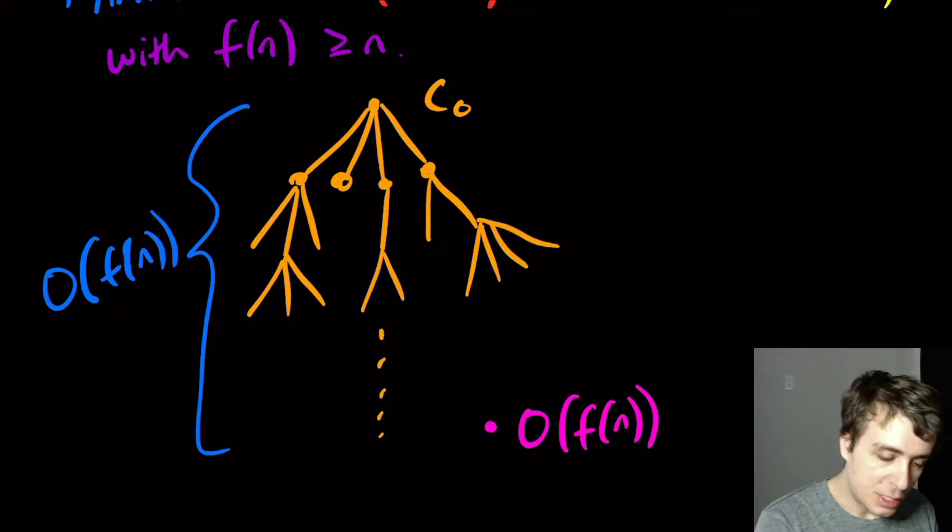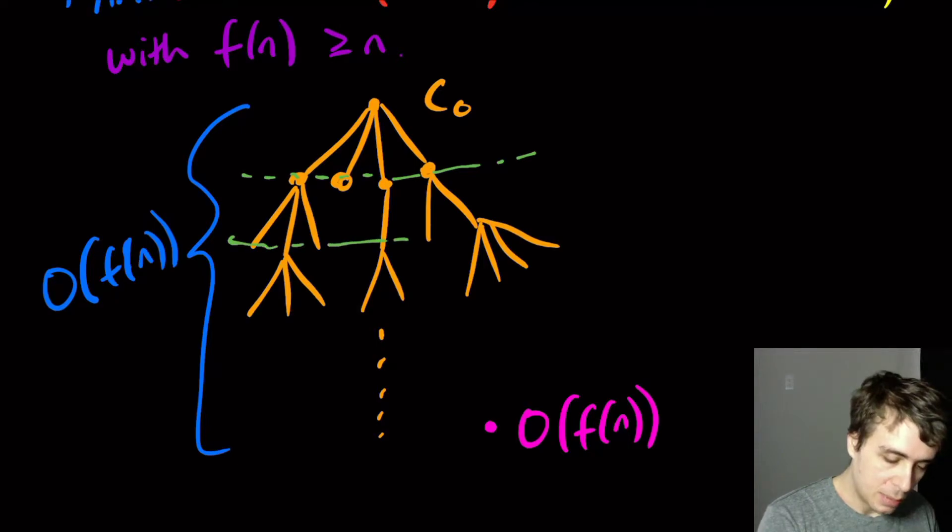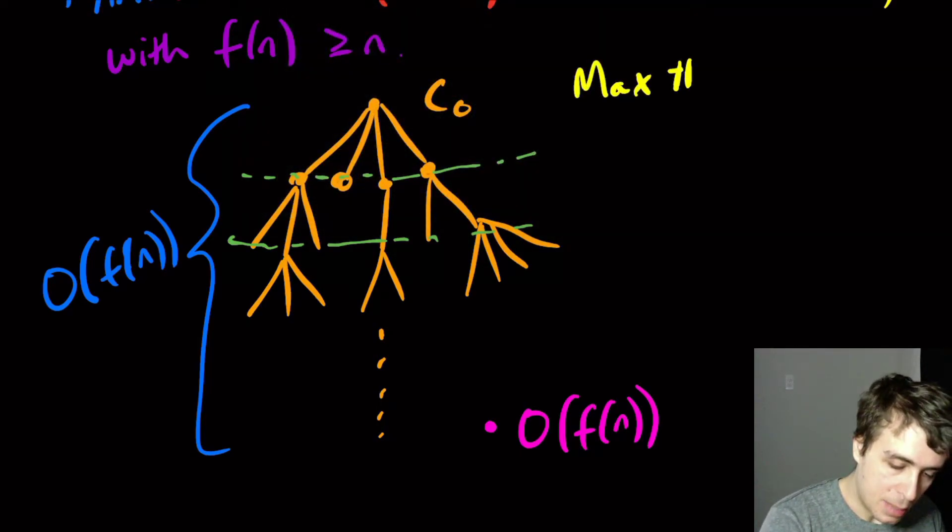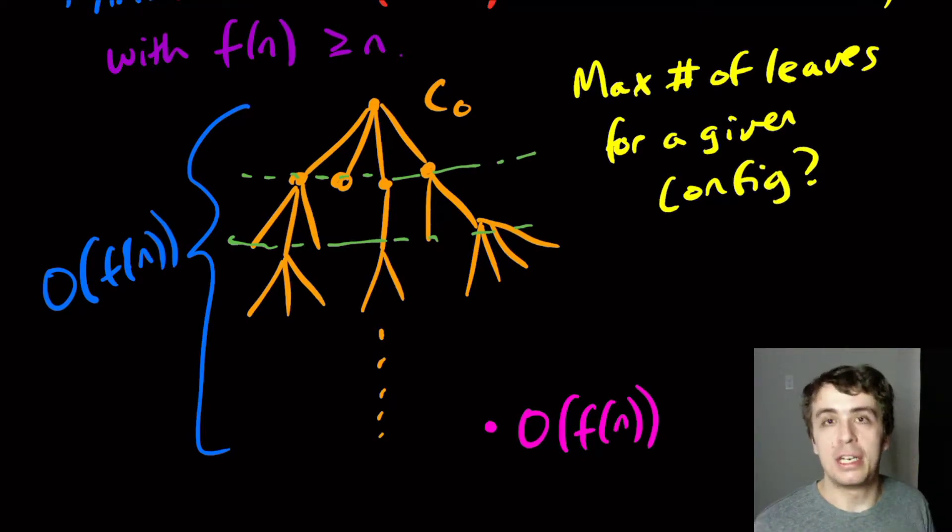And what does the deterministic machine do? Well, the way that we outlined it before is it explores this tree breadth first. So it will look at all of these possible choices. And for each one of them, we're going to look at all the possible choices. So it's going to explore this thing level by level. And what we want to know is, how many of these are we going to see before we inevitably end up down here? So the question is, what is the maximum number of leaves for a given config?